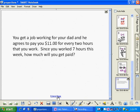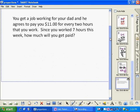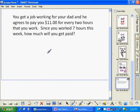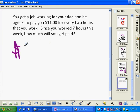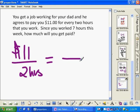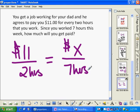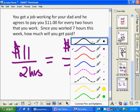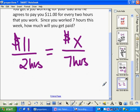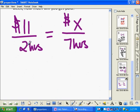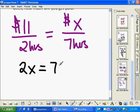And the last problem I'm going to do says you get a job working for your dad, and he agrees to pay you $11 for every two hours that you work. Since you worked seven hours, how much will you get paid? So again, I've got money over hours equals money over hours. So now I am going to cross multiply. And when I do that, 2 times x is 2x. 11 times 7 is 77. Divide both sides by 2.